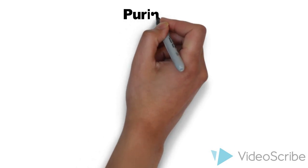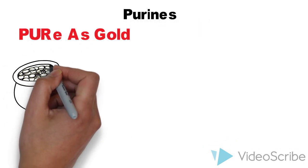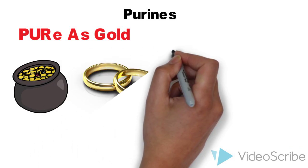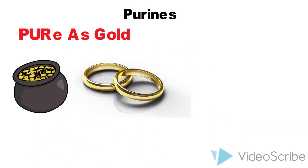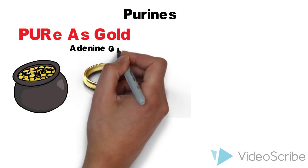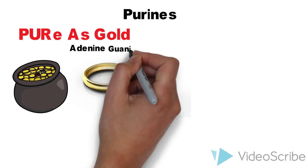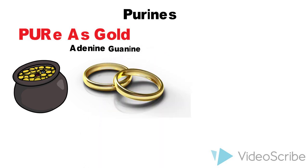To remember the purines, the first mnemonic is 'pure as gold,' where 'pur' in pure refers to purines, A for adenine, and G in gold for guanine.